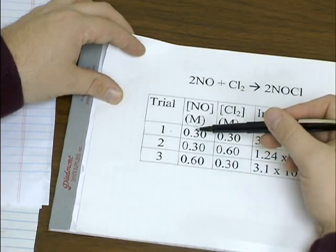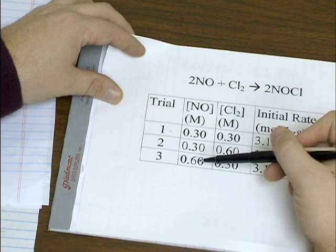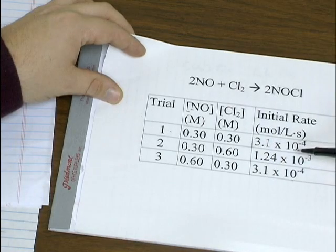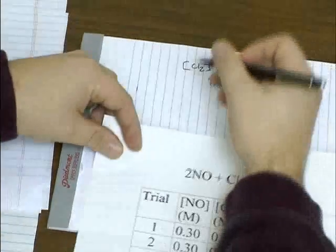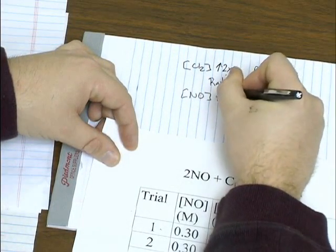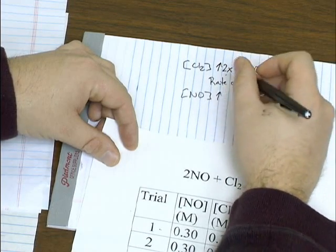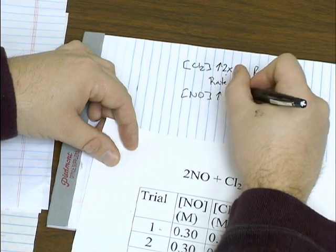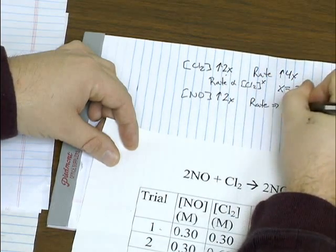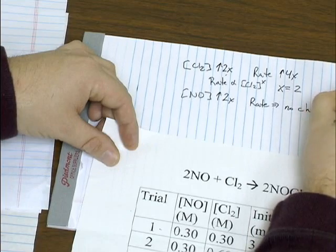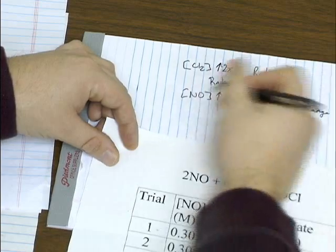You compare trials one and three. It looks like when you double the concentration of NO, the rate isn't changing at all. This can occur in a reaction where varying the concentration will have no effect on the rate. And this is what's known as a zero order reaction, or zero order with respect to NO.